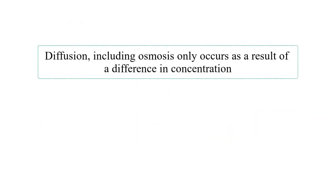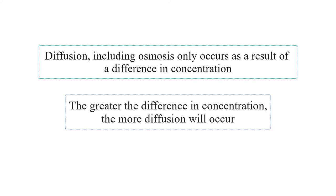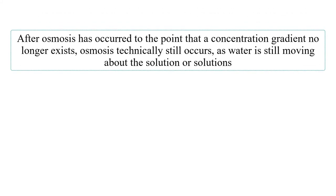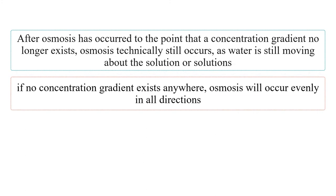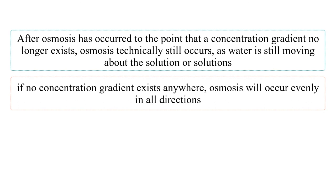Diffusion, including osmosis, only occurs as a result of a difference in concentration. The greater the difference in concentration, the more diffusion will occur. After osmosis has occurred to the point that a concentration gradient no longer exists, osmosis technically still occurs as water continues moving. However, if no concentration gradient exists, osmosis will occur evenly in all directions — no one direction will have a greater rate of osmosis than another, and there is no difference in water concentration to increase the rate of osmosis in any one direction.